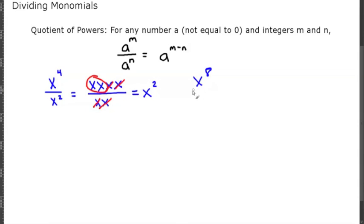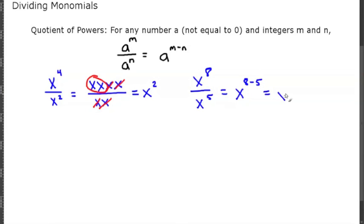So if I give you x to the 8 over x to the fifth, you would just do x to the 8 minus 5, which would be x to the third.